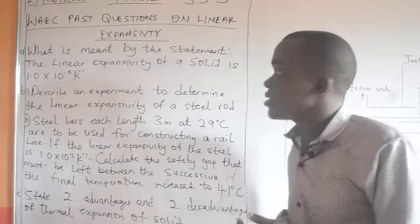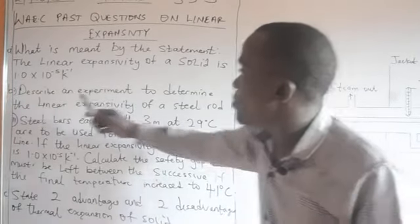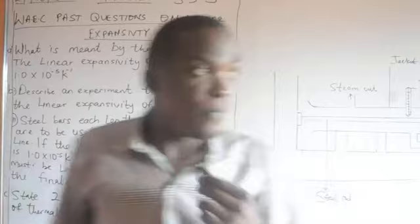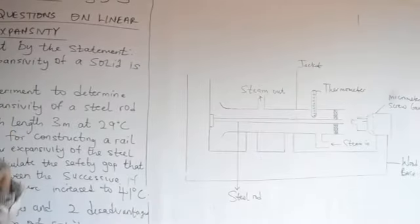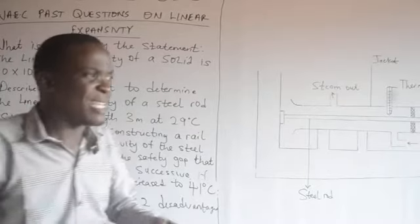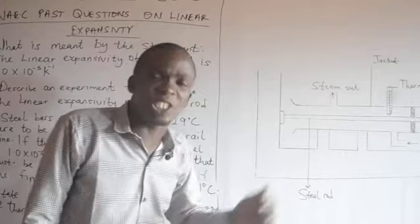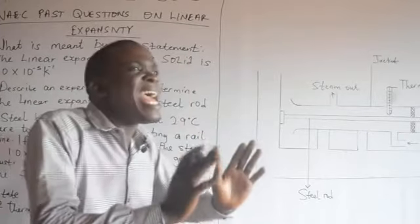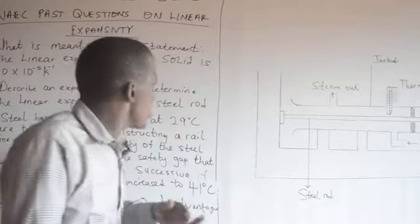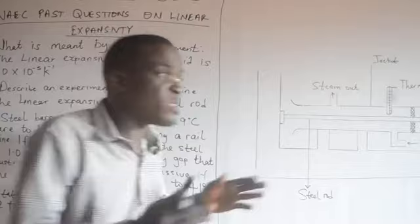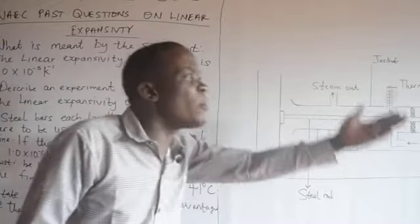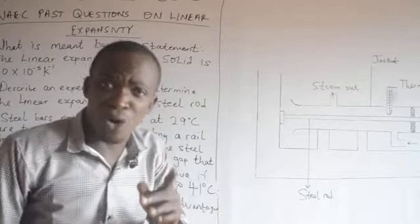Most physics topics have experiments to prove them. The B aspect tells us to describe an experiment to determine the linear expansivity of a steel rod. Before we started linear expansivity, remember there was a laboratory experiment involving the ball and ring experiment and the bar and gauge experiment. Those are main laboratory experiments which many of us are used to. But when it comes to using a steel rod, take note — steel is different from most metals, and the approach is going to be different from the normal bar and gauge or ball and ring experiment.